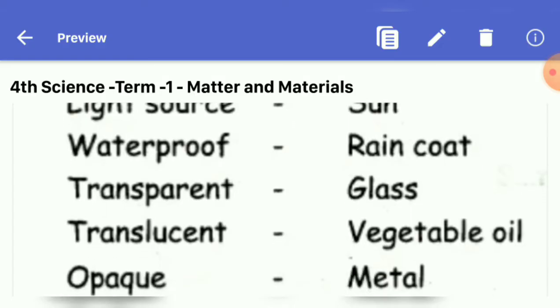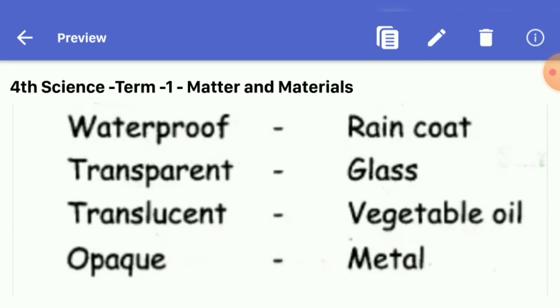Fourth one, translucent, answer vegetable oil. Fifth one, opaque, answer metal.